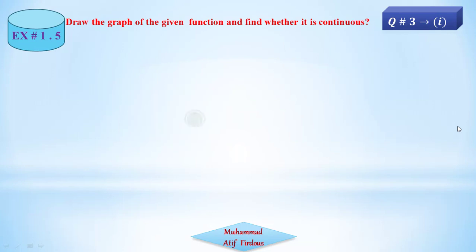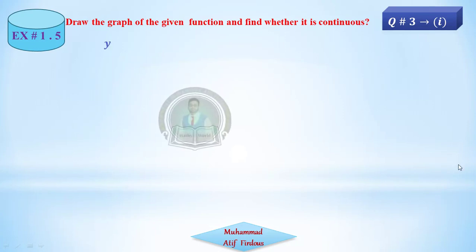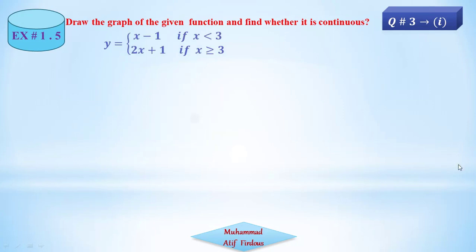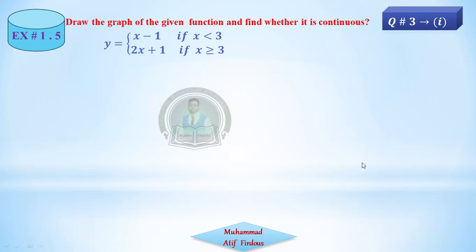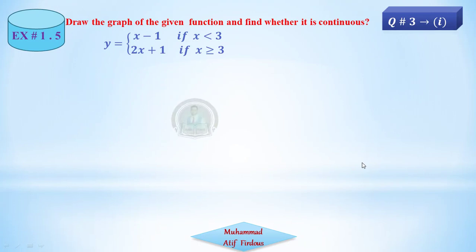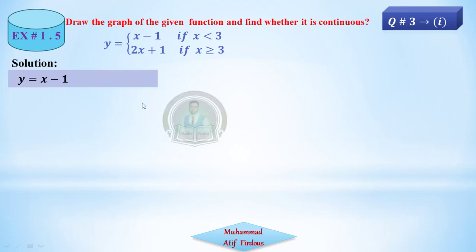I have uploaded this lecture, but now we will see the graph and determine whether it is continuous or not. Let's check the function: y equals x minus 1 for x less than 3, and y equals 2x plus 1 if x is greater than or equal to 3. We divide the graph into two parts. The first part is y equal to x minus 1 when x is less than 3.